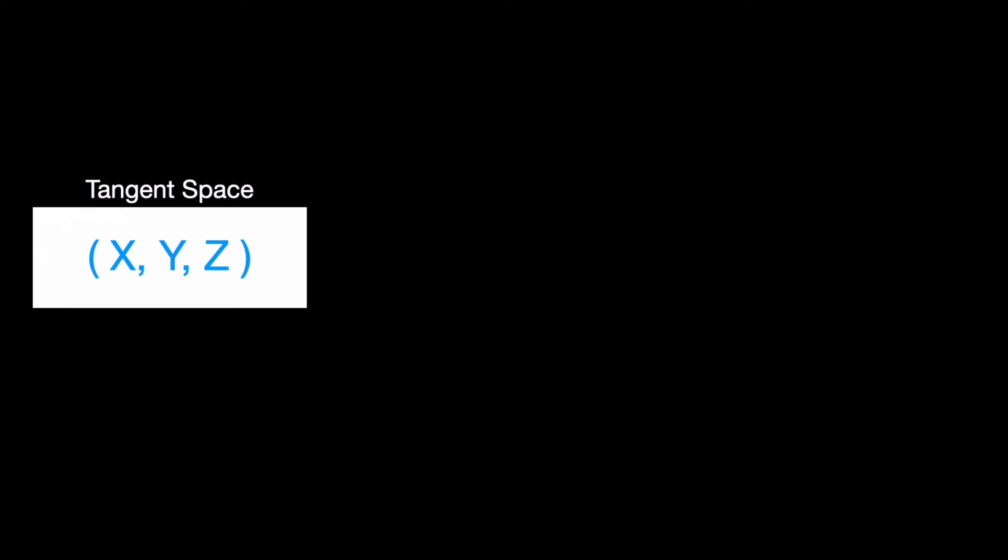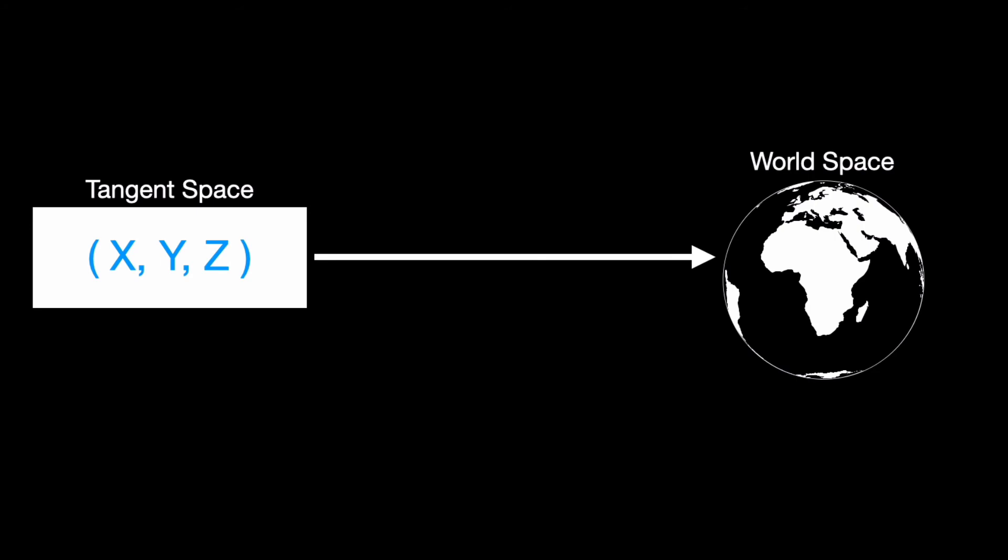But we need to convert that into world space. Because that's what we are working in. We're working in world space. So how do we go about converting our XYZ tangent space vector into world space? Well, we use something called a TBN matrix. TBN matrix, where T represents the tangent, B represents the bi-tangent, and N represents our good old friend, the normal vector.